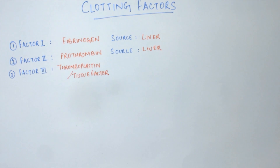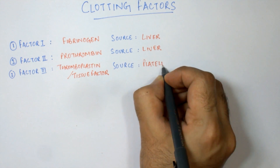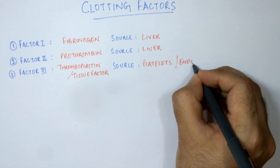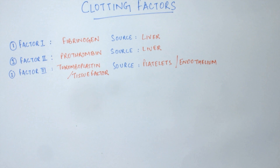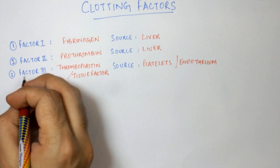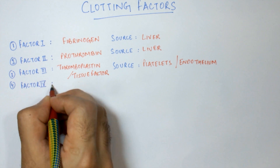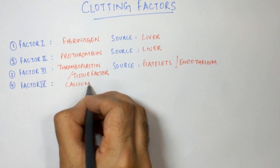Factor number three is thromboplastin, also known as the tissue factor. The source of factor number three is the platelets and the endothelium of the blood vessels. This factor is involved in the initiation of the intrinsic pathway — whenever there is trauma to the blood vessel, factor number three is released, which starts the intrinsic pathway of blood coagulation.